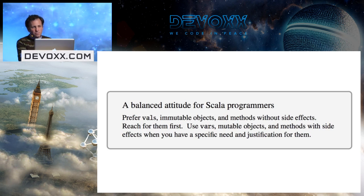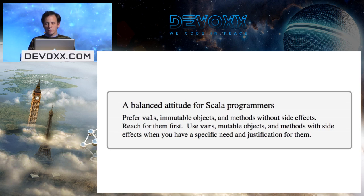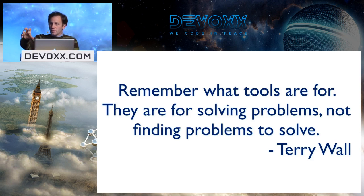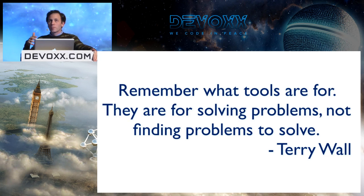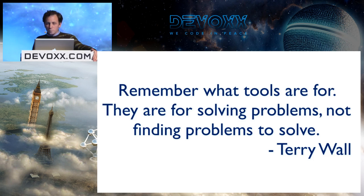That is really what Scala is. You can use it to program in a style very similar to Haskell, and there's a lot of great stuff when you do that. But Haskell style doesn't quite fit as well in Scala as it does in Haskell. The sweet spot for Scala is to turn it up mostly functional, but not quite all the way. As the Programming in Scala book says: prefer vals, immutable objects, and methods without side effects — reach for them first. But don't be afraid to use vars, mutable objects, and methods with side effects when they make things better.